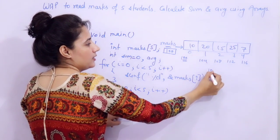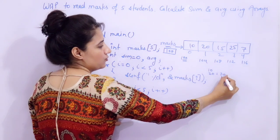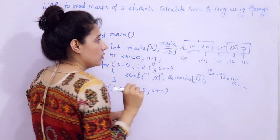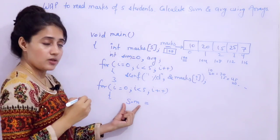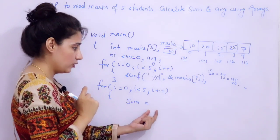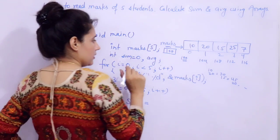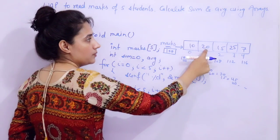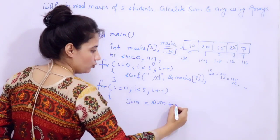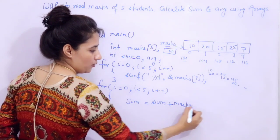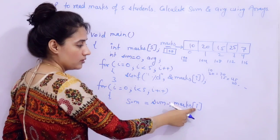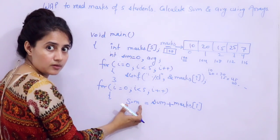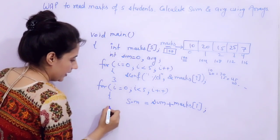First we access 10, then 20, then we do sum — that is 30. Then 15 is added, giving 45. Then 25 is added like this. So in the sum variable, we are going to store whatever the sum of these array elements. So: sum = sum + marks[i]. And i goes from 0 to 5, accessing each element one by one, and the value is added to sum. The final sum is stored back in the sum variable. This is how we calculate the sum.